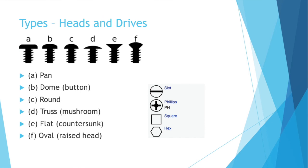More than just the thread and general type, you have to be able to screw the screw into something, and that revolves around the heads and drives needed. Here are some common head types, starting left to right in the top left, with labels beneath: pan head, dome (also known as button head), round head, truss (also known as mushroom), flat (known as countersunk — a countersunk screw has that angled shape, whereas a counterbore would be more of a rectangular flat head), and oval (also known as raised head). There are many more than this. On the right you can see common drives — that's the shape of the slot you engage to turn the screw: a basic slot type (also known as flat head), Phillips, square, and hex, which you might use a hex wrench with. There are so many more types of drives — these are just the ones seen most commonly.